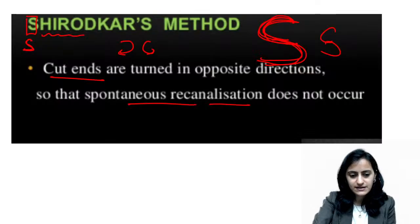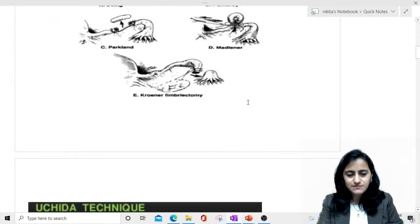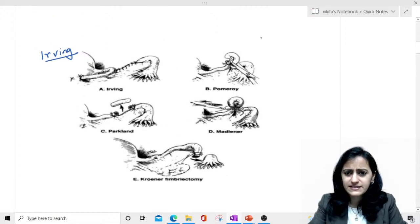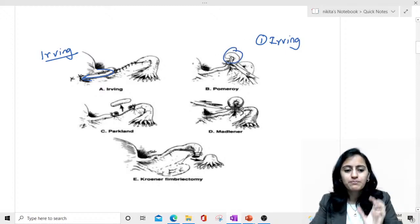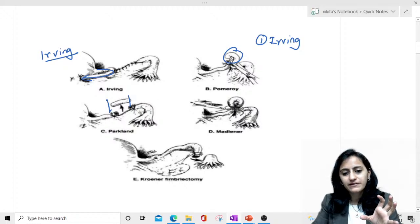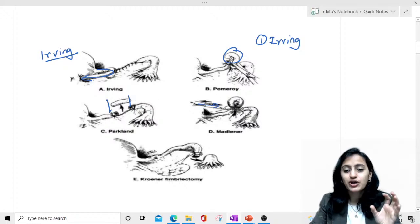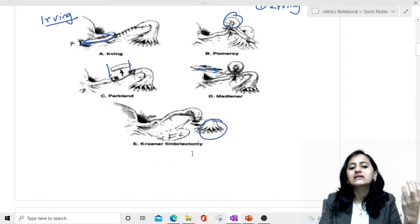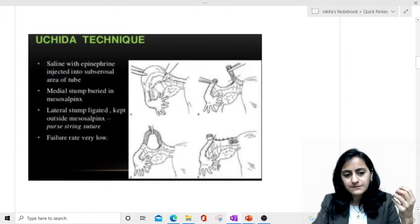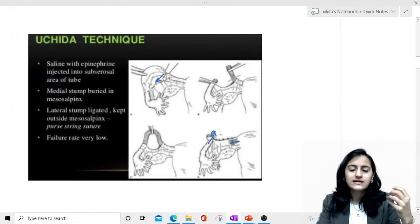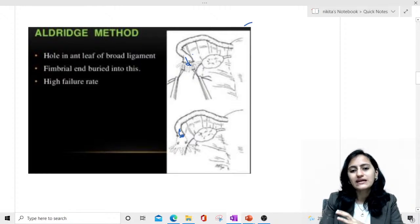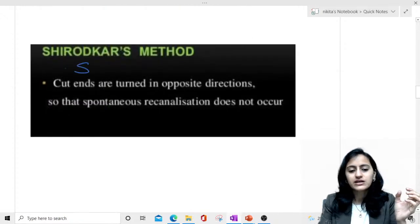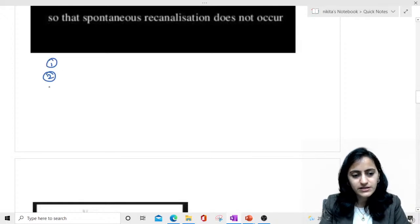Quick summary of all techniques: Irving is inside the myometrium. Pomeroy creates a pom-pom loop and cuts it. Parkland removes a part of the tube. Madlener's is just crushing — no cutting. Criner's is fimbrectomy. Uchida: inject saline, medial end inside mesosalpinx, lateral end outside — separated. Aldrich is Criner's modification — fimbrial end into broad ligament. Shirodkar's has two opposite ends.